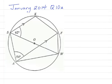Alright, this is January 2014, Question 10a. It says: in the diagram below, not drawn to scale, O is the center of the circle. The lines SK and AF are parallel. Angle KSW is 62 degrees, and angle SAF is 54 degrees.